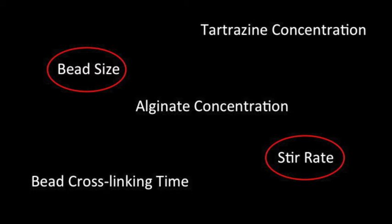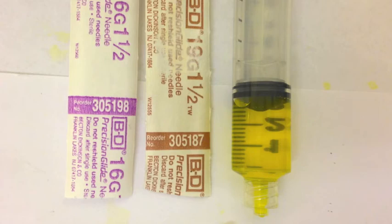Two, 2.5, and 3 mm beads were used for this experiment. The experiment was completed with stir rates of 120, 240, and 360 RPM. Different gauge syringes were used to alter hydrogel bead size.